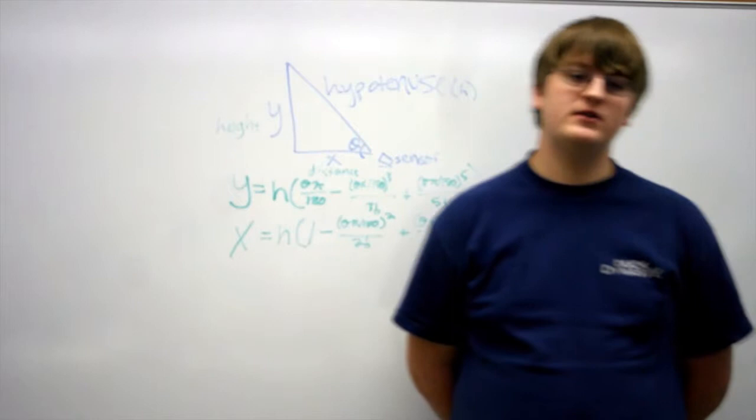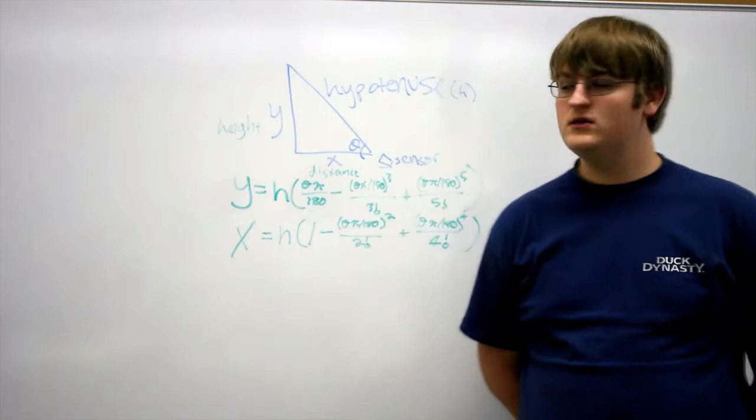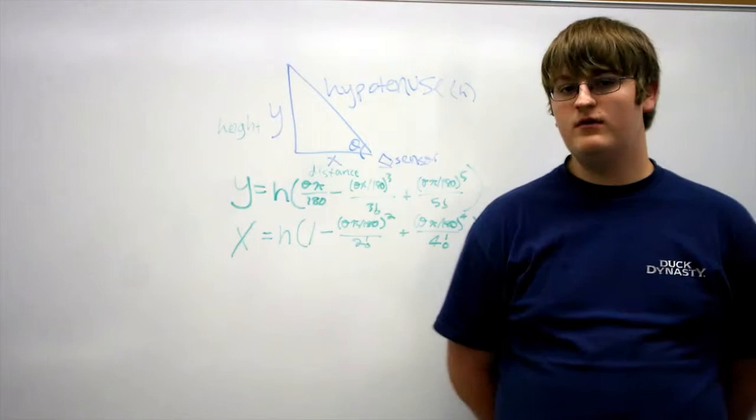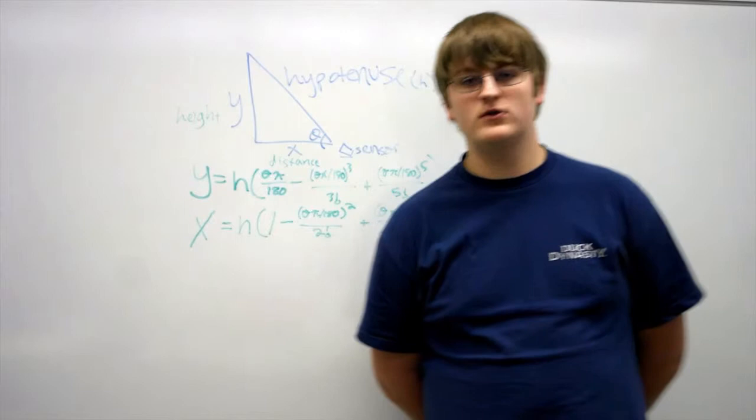Now the Taylor Series is a derivative of sine and cosine. It can be applied to find the height and distance of an object as represented in this graph here. It is represented by theta minus theta cubed over 3 factorial plus theta to the fifth over 5 factorial for sine and 1 minus theta squared over 2 factorial plus theta to the fourth over 4 factorial for cosine.